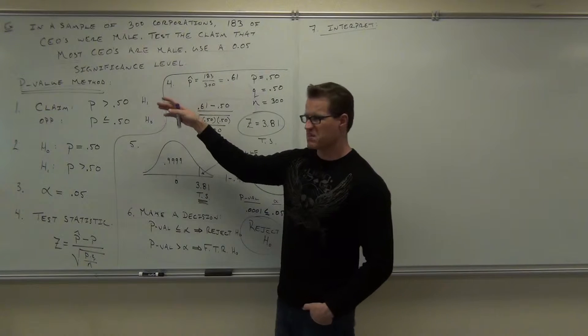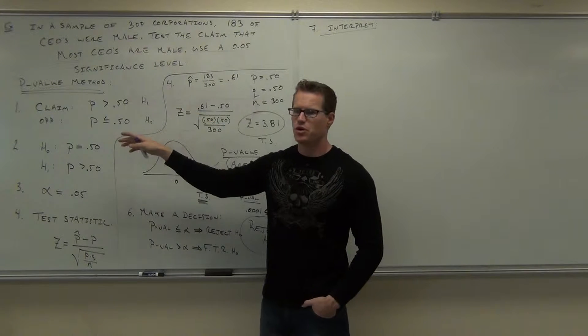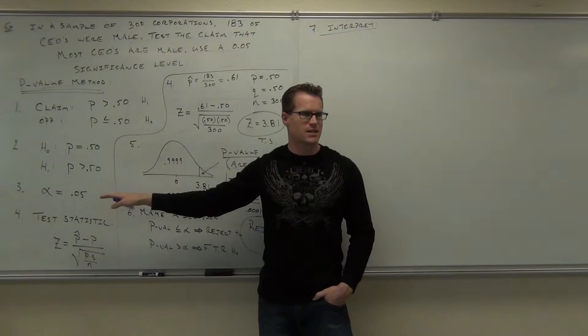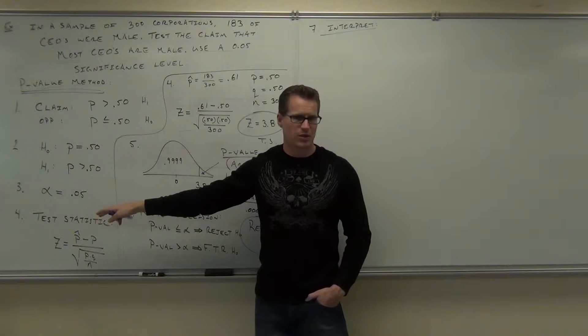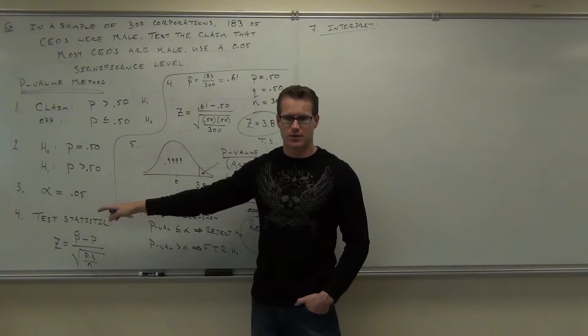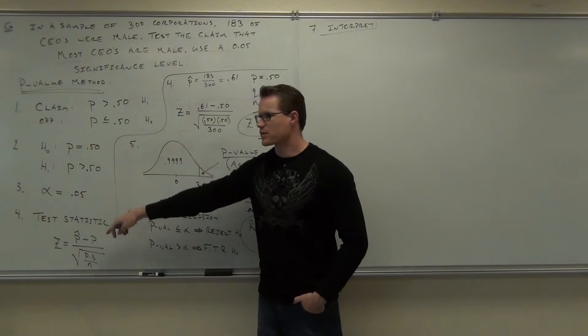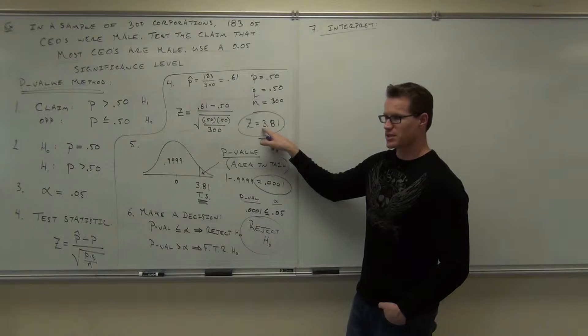So the claim is the opposite. We're going to have H sub 0 and H sub 1 — no problem. Alpha is very easy; it's given to you. The test statistic is the only place you do math — right there. That's it. You get your test statistic.